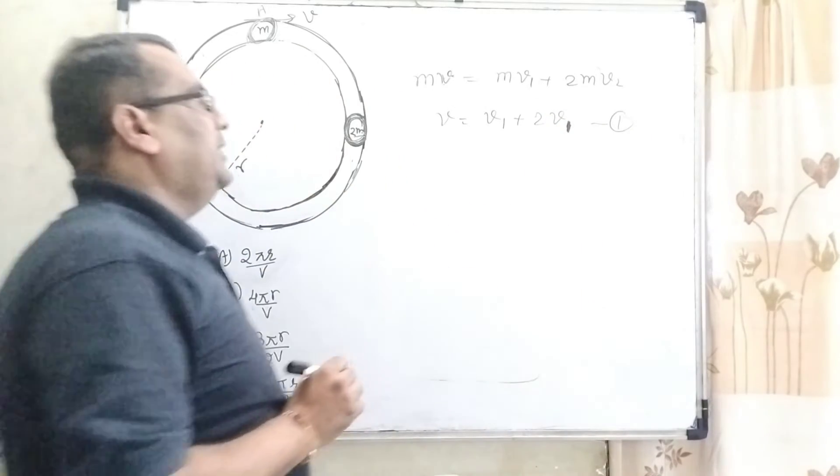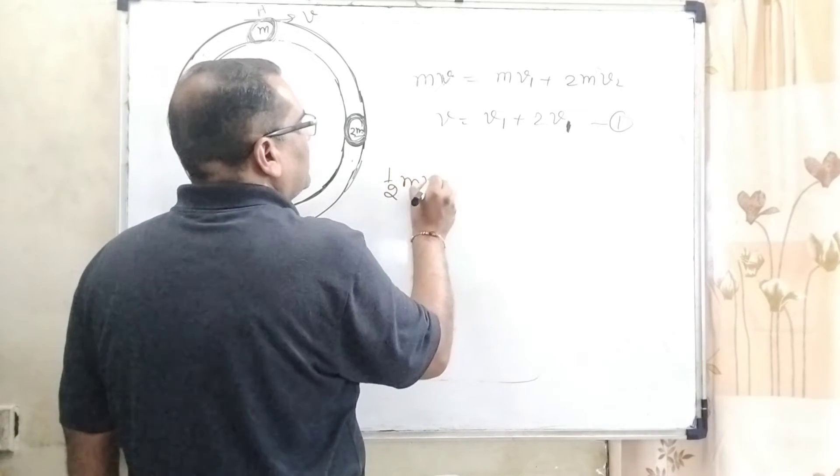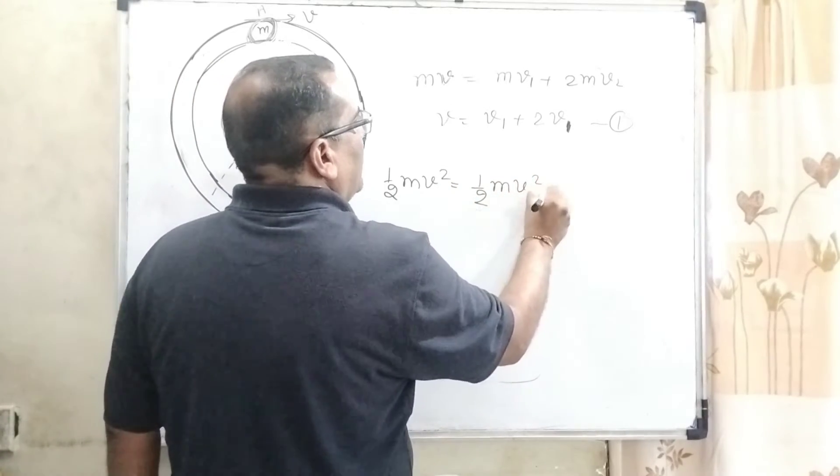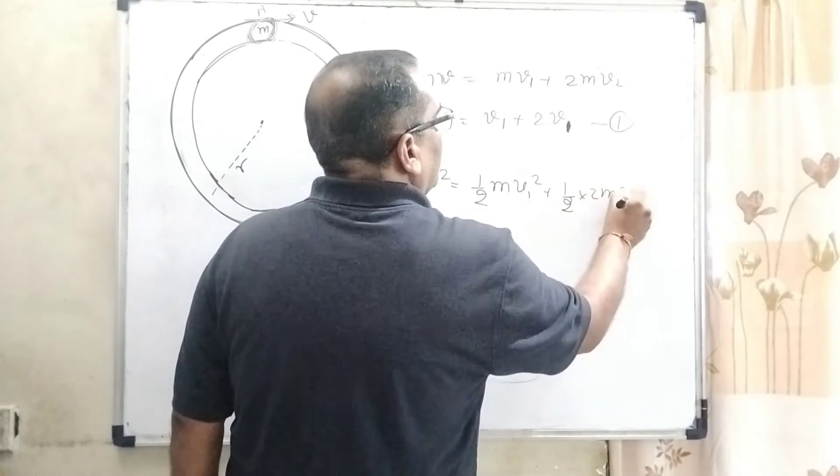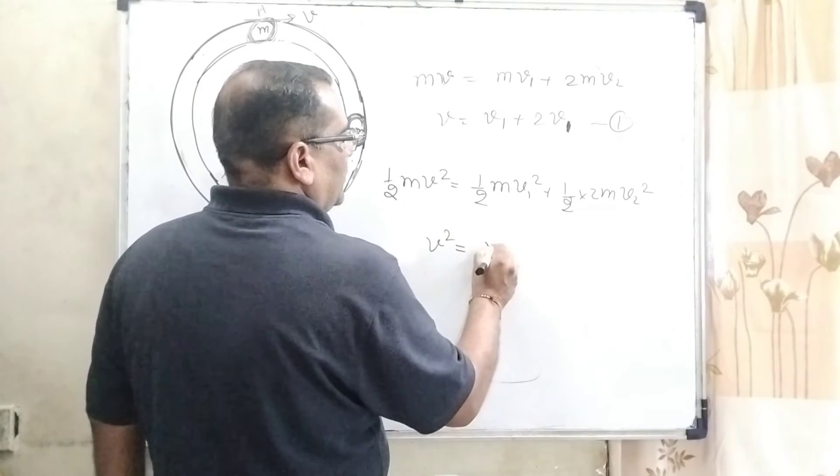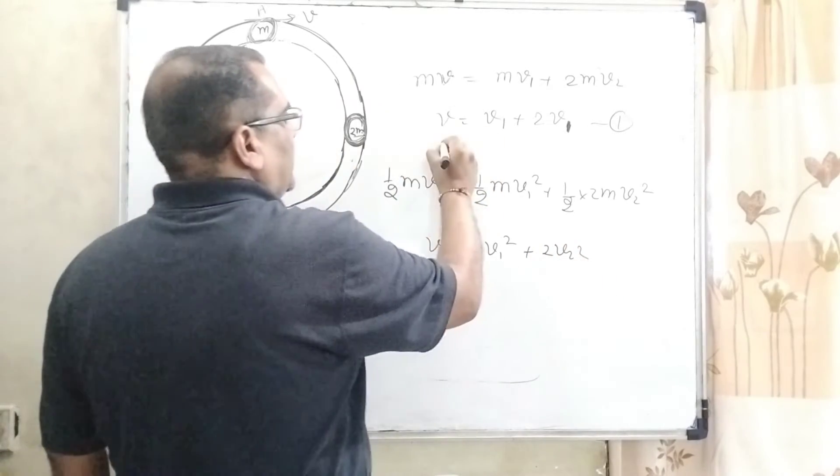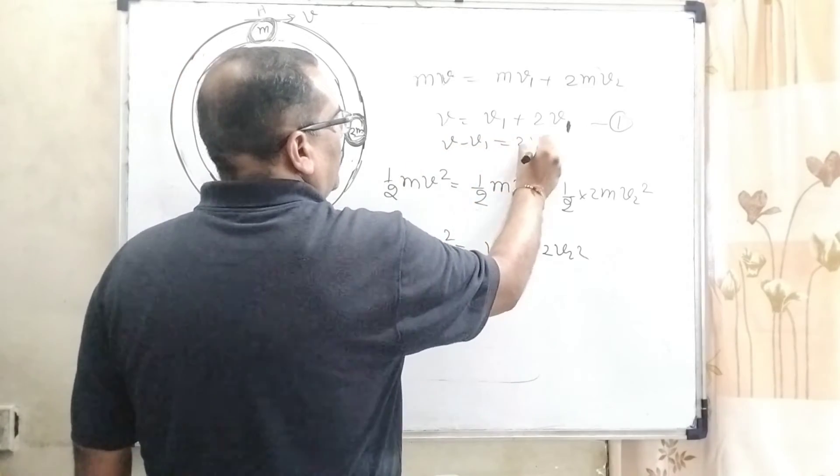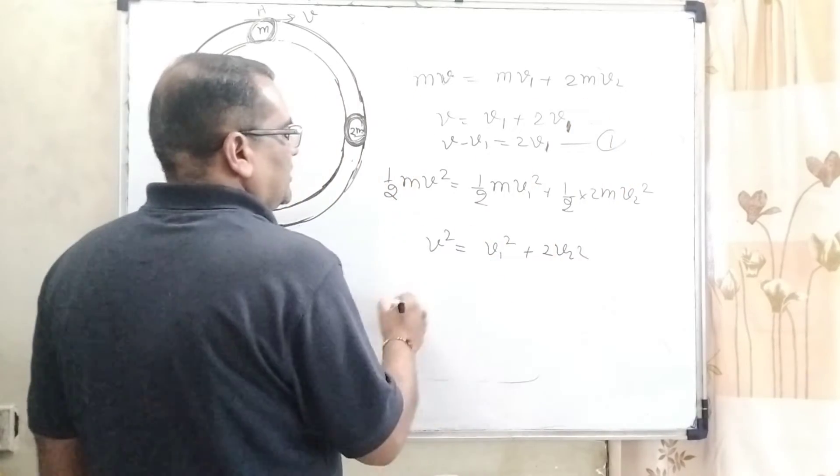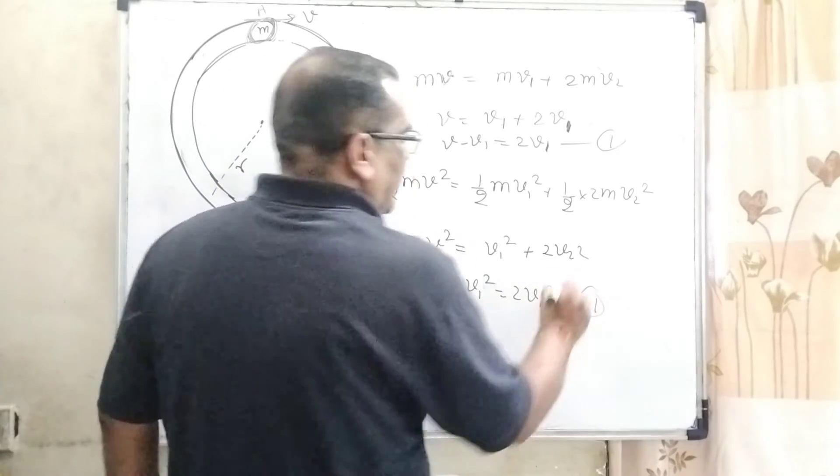And like that we are using kinetic energy. Before collision the kinetic energy is (1/2)mv². And after collision now its kinetic energy becomes (1/2)mv1² + (1/2)(2m)v2². So (1/2)m gets common and cancels out. So here v² = v1² + 2v2². So it can be written as v - v1 = 2v2. Let us give this the name first equation. And similarly v² - v1² = 2v2². That is the second equation.